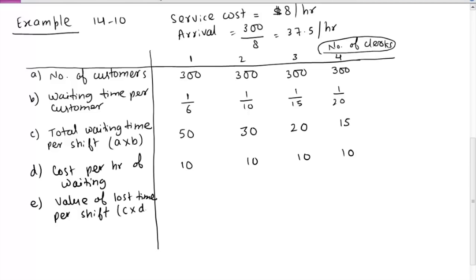Another characteristic of arrivals before the queue forms is behavior. One standard behavior is balking — suppose somebody wants to use a service facility, sees a big queue, is in a hurry, and decides not to join the queue. They may not purchase what they wanted and just leave. That is called balking.